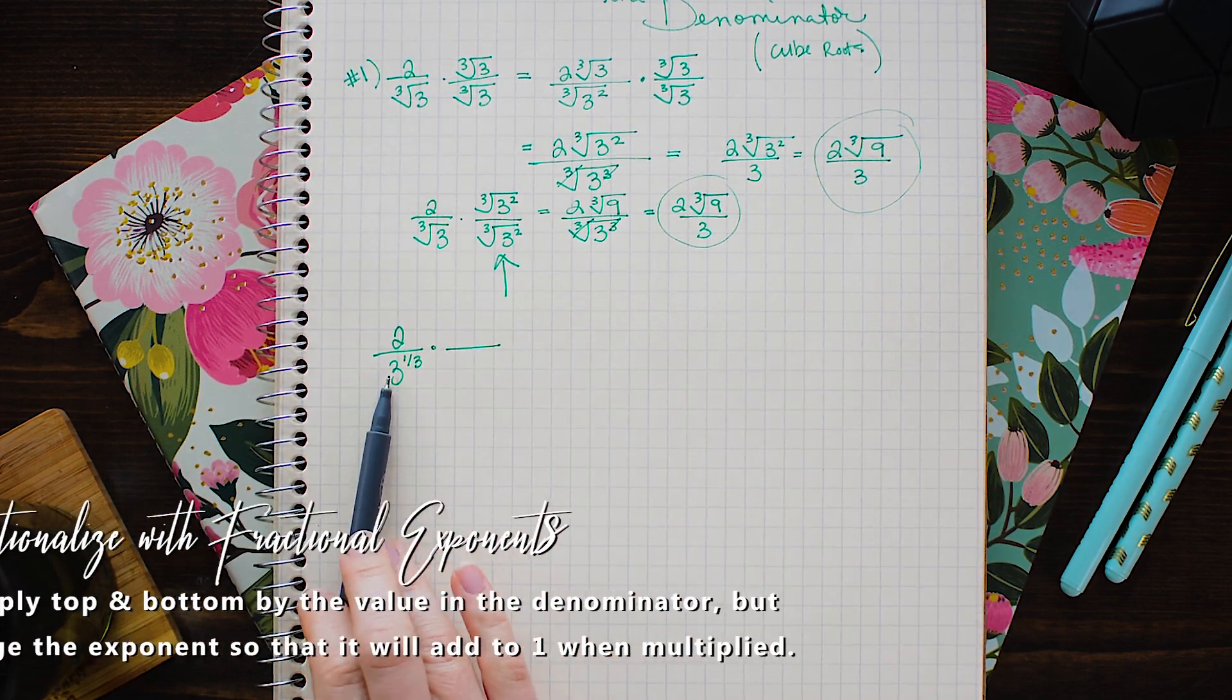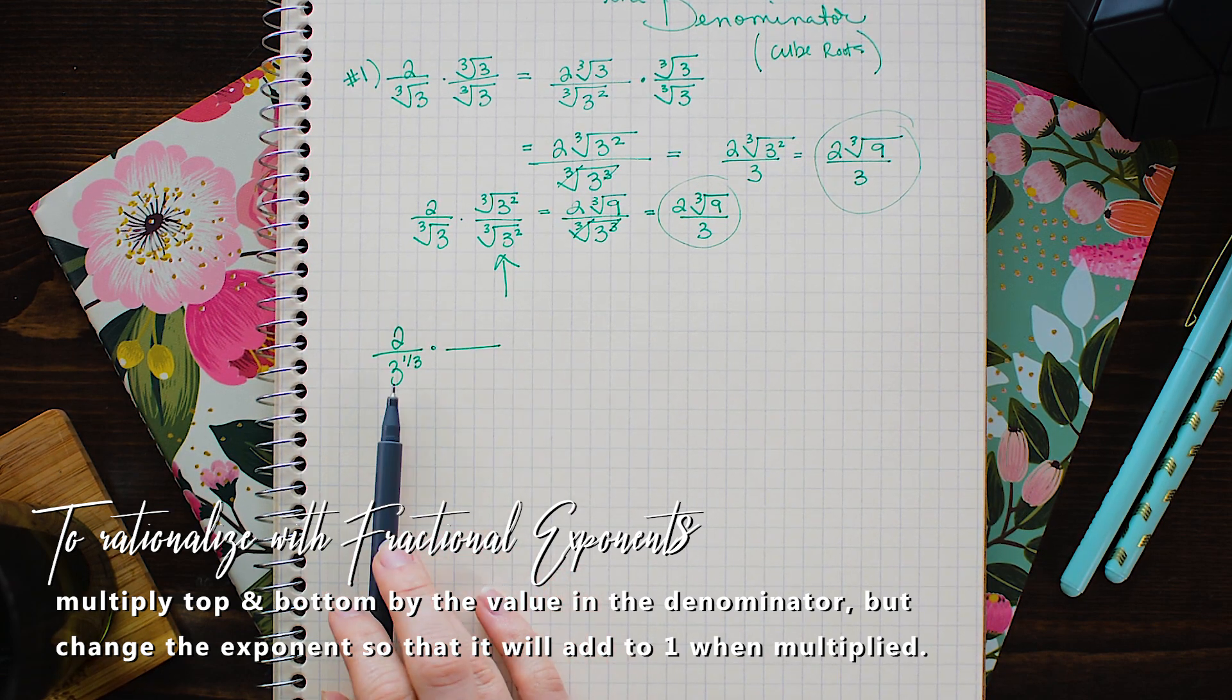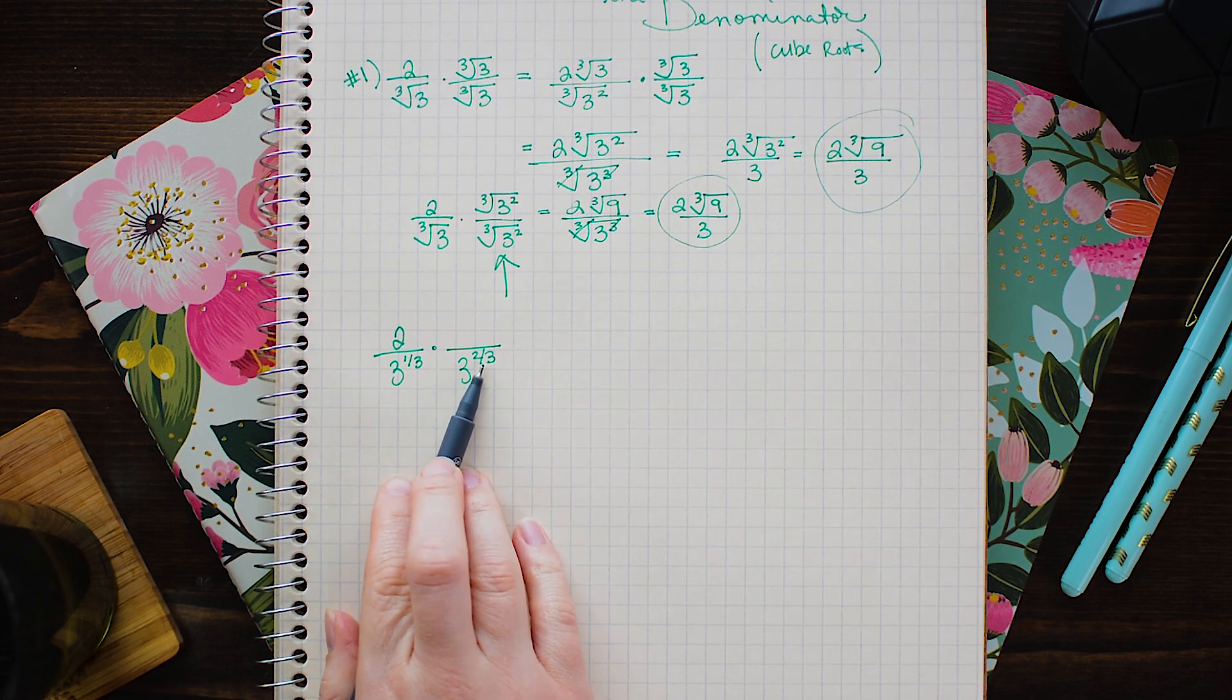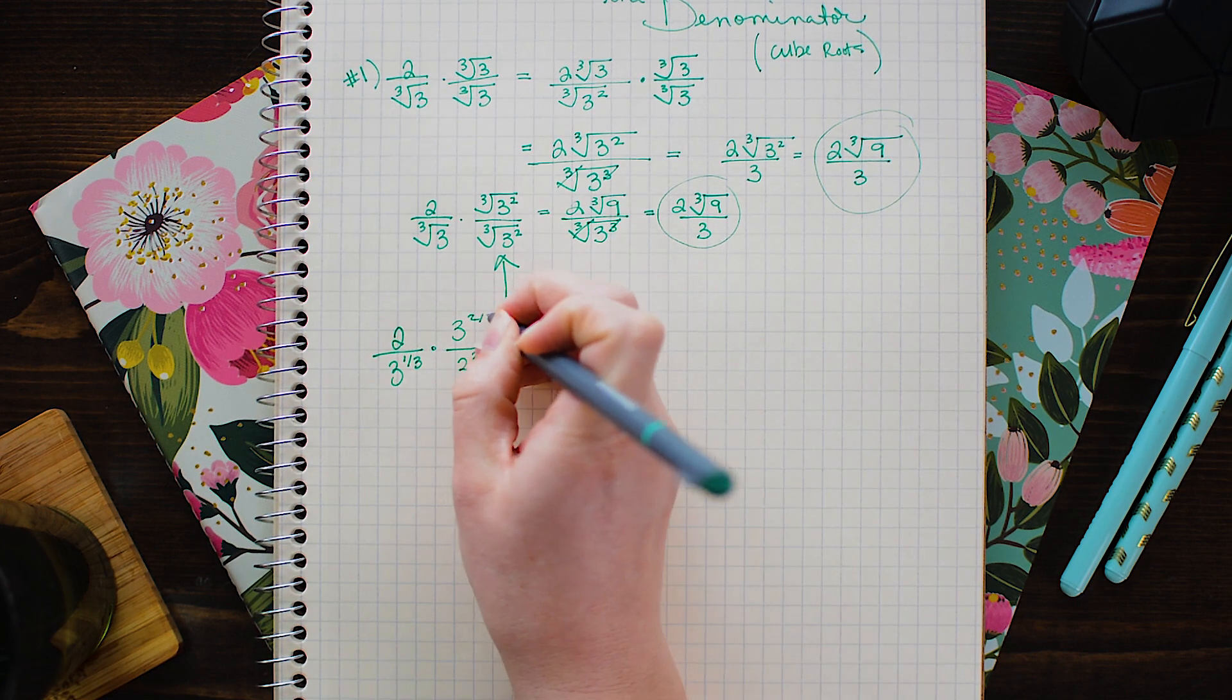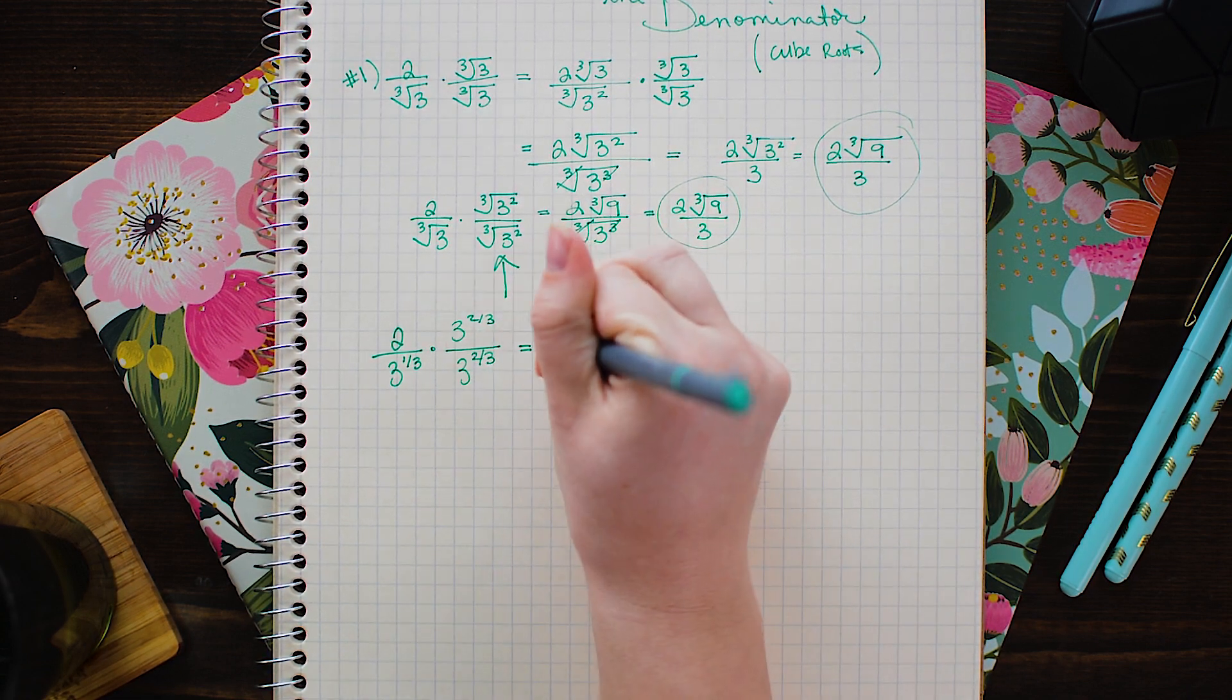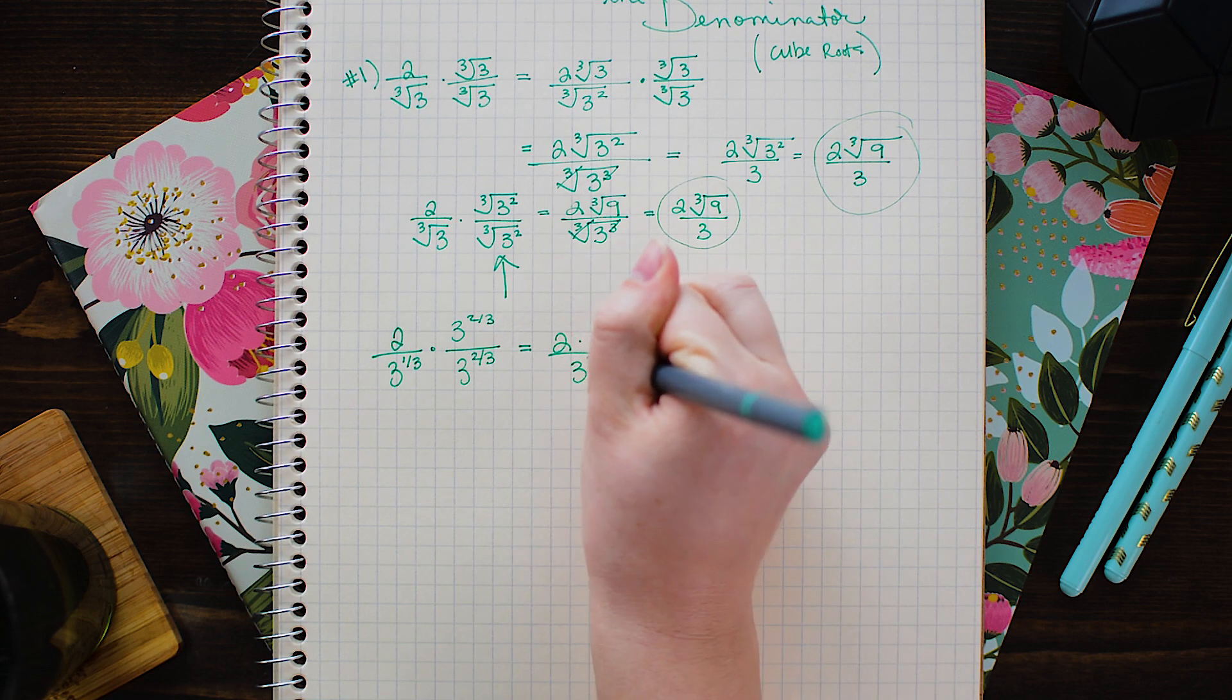We need to multiply by 3 to a power where when those powers added together they equal 1. So we're going to multiply by 3 to the 2 thirds power. Because 1 third plus 2 thirds equals 3 thirds and 3 thirds equals 1. Again I'm going to do that to the top and bottom. So that way we're multiplying by a form of 1.